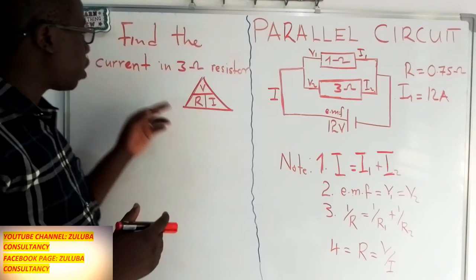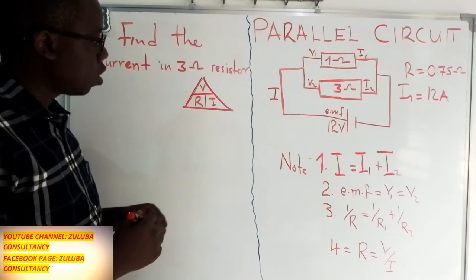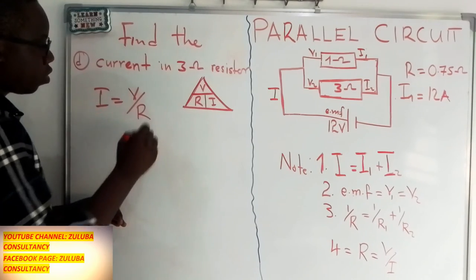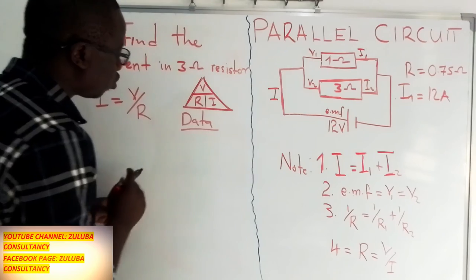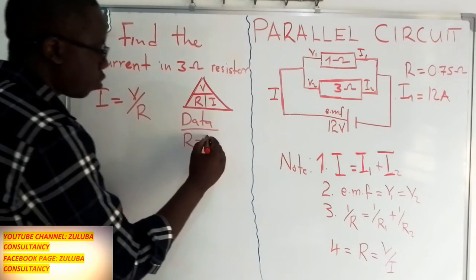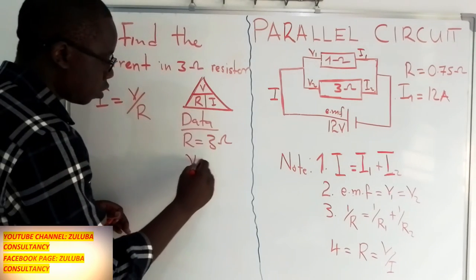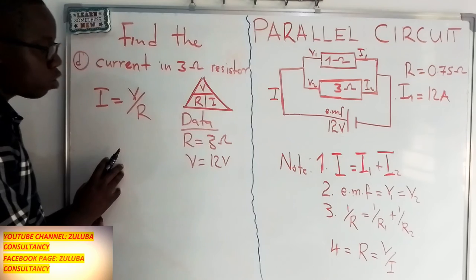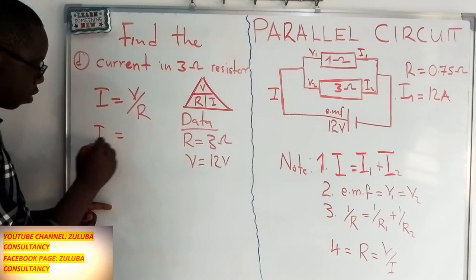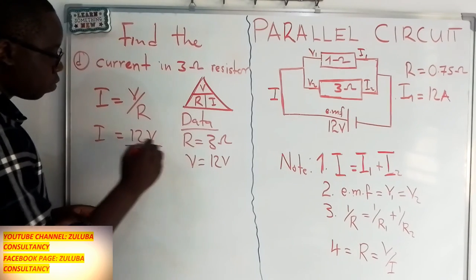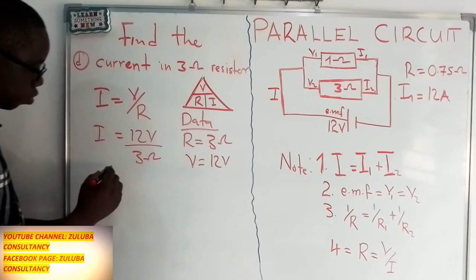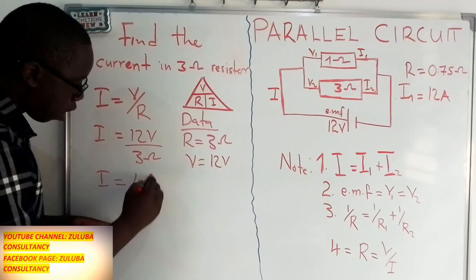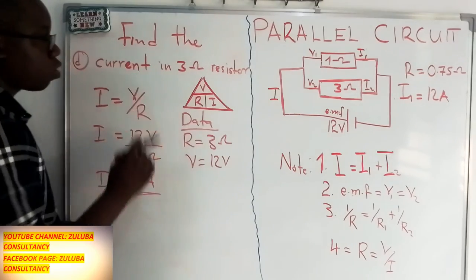The next question asks for the current passing through the 3-ohm resistor. Using Ohm's law again, current equals voltage divided by resistance. The resistance is 3 ohms, and the voltage remains 12 volts since voltage does not change in a parallel circuit. So the current equals 12 volts divided by 3 ohms, which gives us 4 amps.